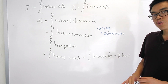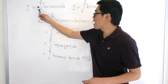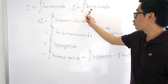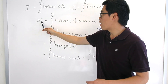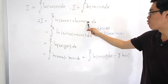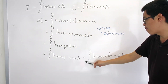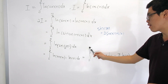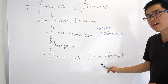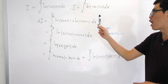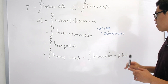So far so good. We want to find I, and even though we can't yet, we've shown that 2I equals the integral of ln(sin 2x) from 0 to π/2 minus (π/2)·ln 2. If we can figure out that integral in terms of I, then we can solve for I, since the other term is just a constant.